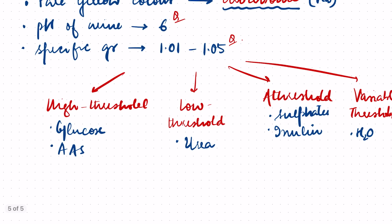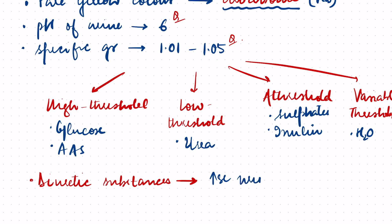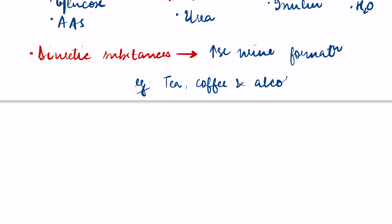The final definition is diuretics. Diuretic substances are those substances which increase urine formation — for example, tea, coffee, and alcohol. These are the substances which increase urine formation and are known as diuretics.